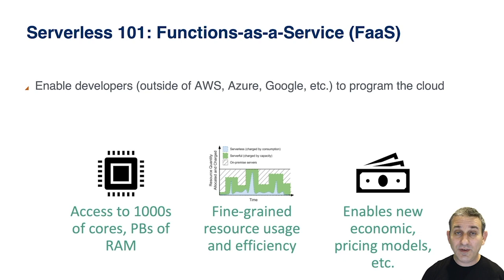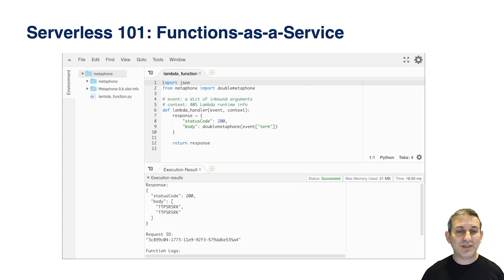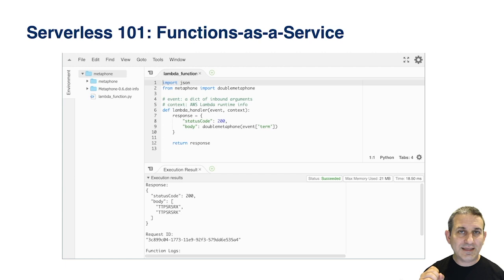If you've never seen a functions-as-a-service interface, here's a simple one from AWS. You can register a function — in this case in Python, but you can pick your language. That sequential function can be executed in the cloud by sending it a remote request over a REST endpoint. You can see a result here at the bottom of one of those executions. Very straightforward — this function just happens to run in the cloud.